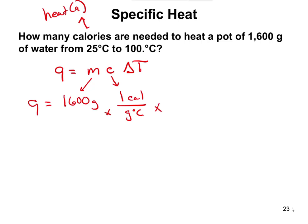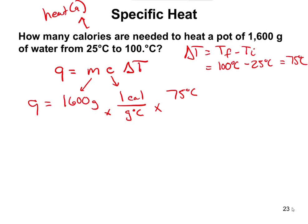Delta T equals T final minus T initial: 100 degrees Celsius minus 25 degrees Celsius gives a delta T of 75 degrees Celsius. Grams cancels with grams, degree Celsius cancels with degree Celsius, leaving us with calories. Taking 1,600 times 75 times 1 calorie gives us 120,000 calories.